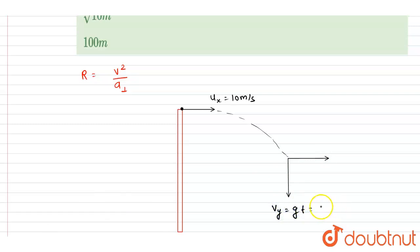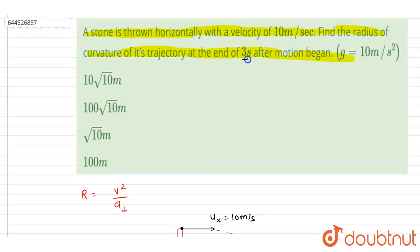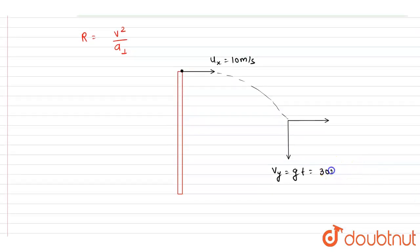The vertical velocity vy can be obtained using the first equation of motion: vy = g × t. Here g = 10 and t = 3 seconds, so vy = 10 × 3 = 30 meters per second. The horizontal component vx remains equal to ux, that is 10 meters per second.